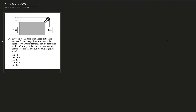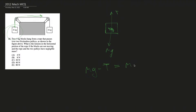Number twenty-six: two 4 kg blocks hang from a rope over two frictionless, massless pulleys. What is the tension in the horizontal portion of the rope if the blocks are not moving? For one 4 kg block: mg equals T (since acceleration is zero). T = 4 × 10 = 40 newtons.